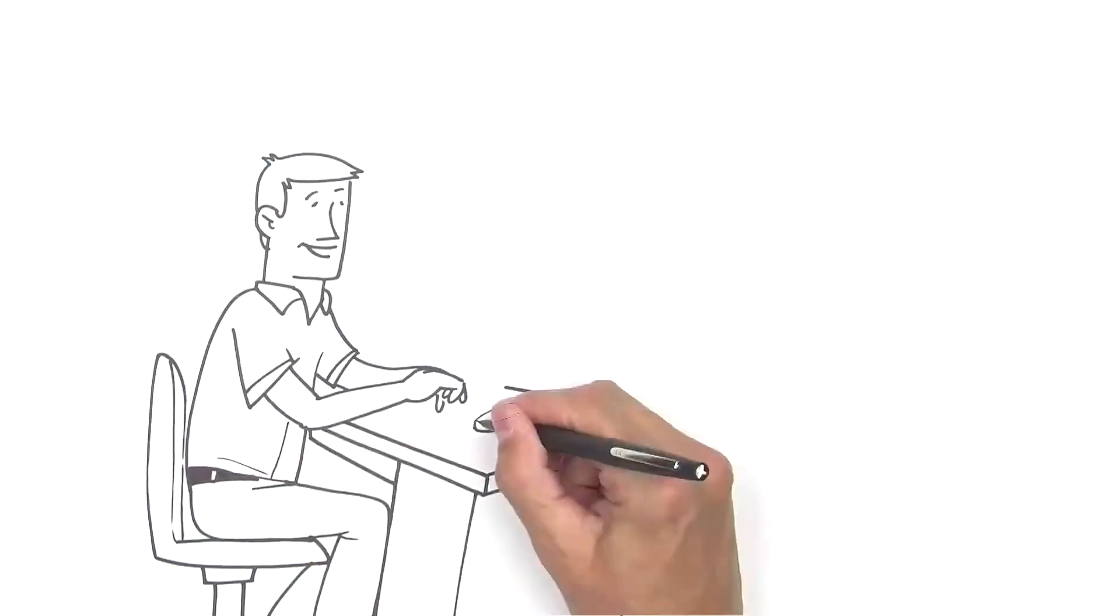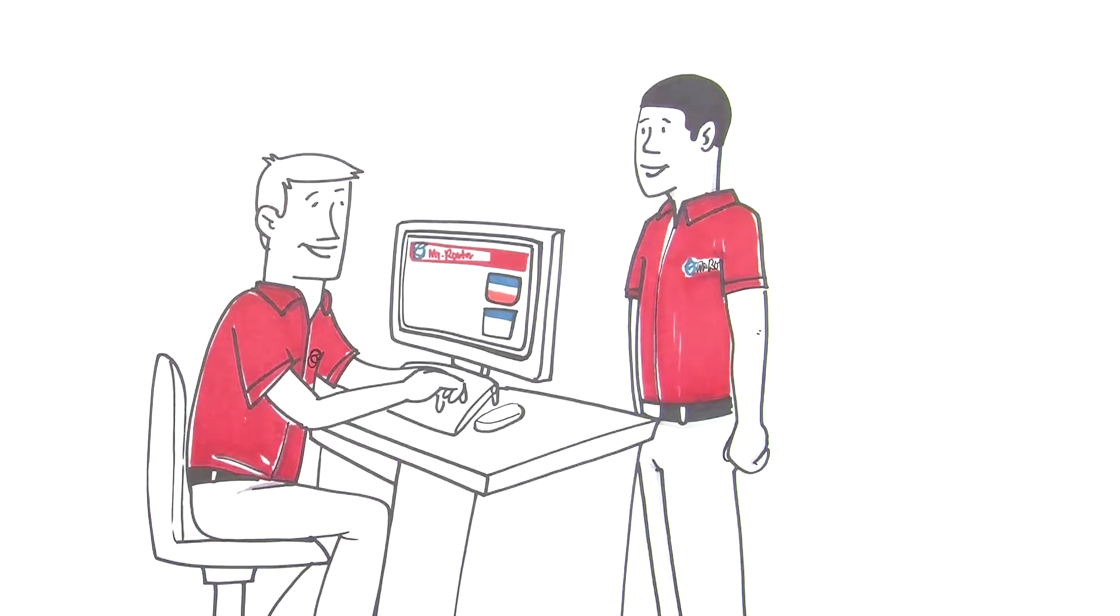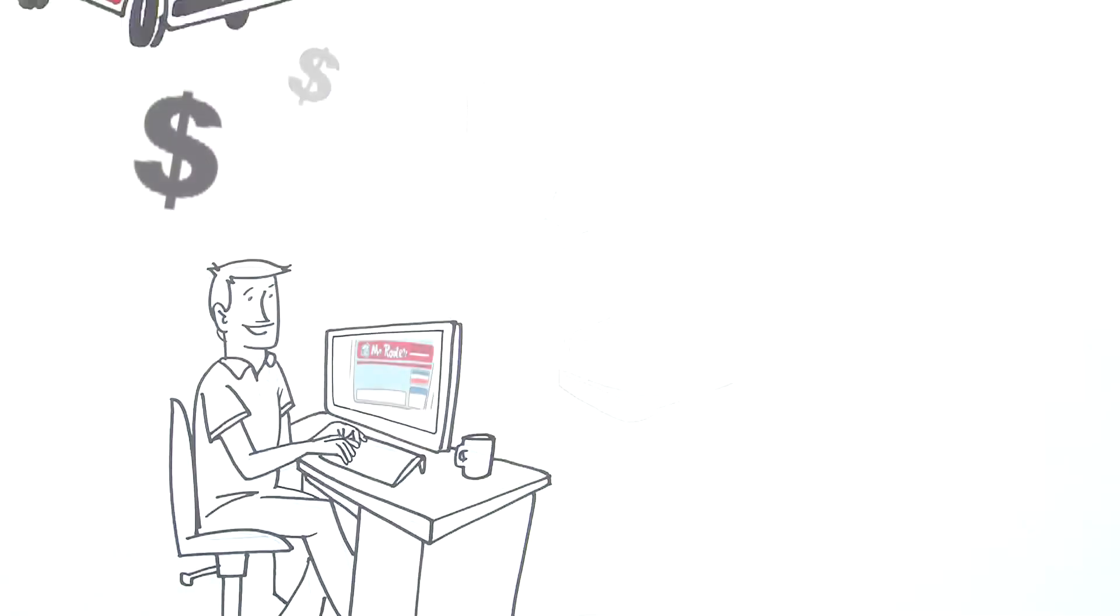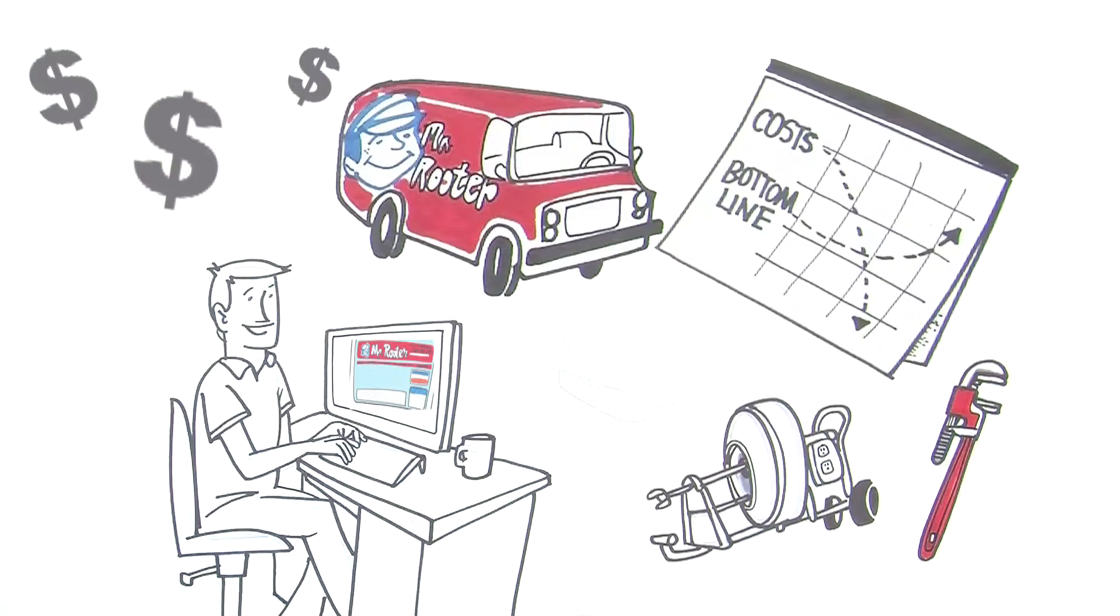Joe likes that, and being able to recruit and keep good employees. He knows turnover is expensive. Plus, the buying power of a national brand. He'll pay less for supplies and services, which also increases his bottom line.